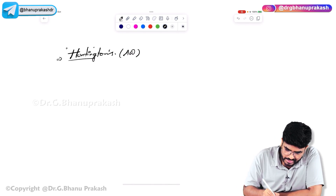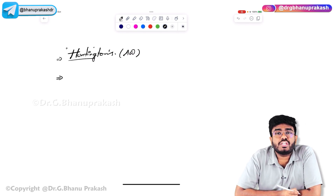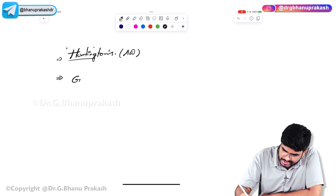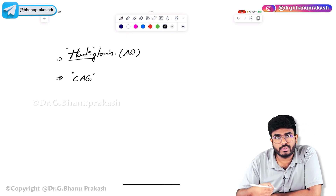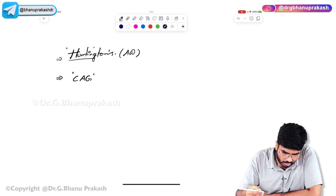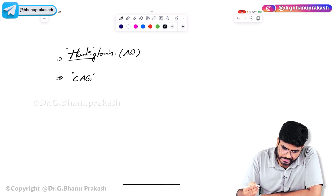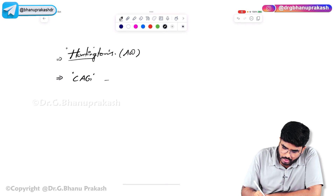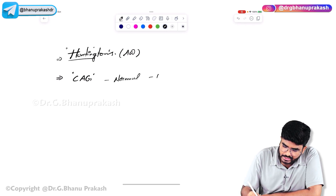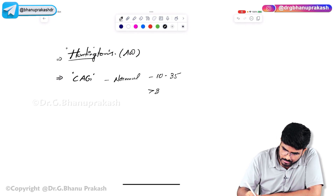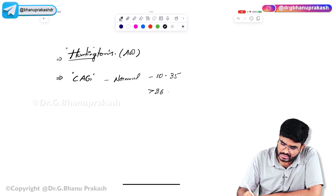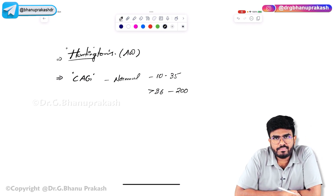In Huntington's disease, there is a gene mutation leading to CAG trinucleotide repeats. More and more CAG repeats occur. Normal people have 10 to 35 repeats. If a patient has more than 36 repeats — between 36 to 200 repeats — then we say this person has Huntington's disease or Huntington's chorea.